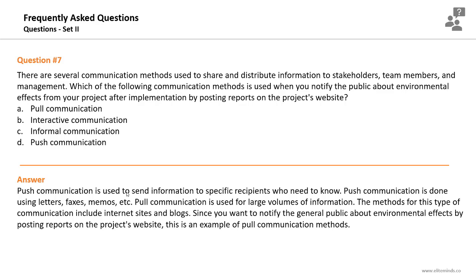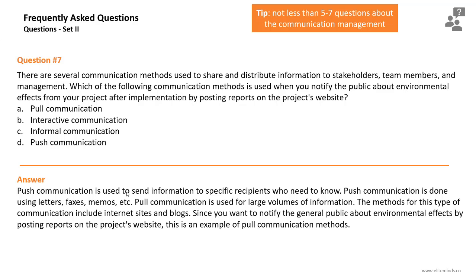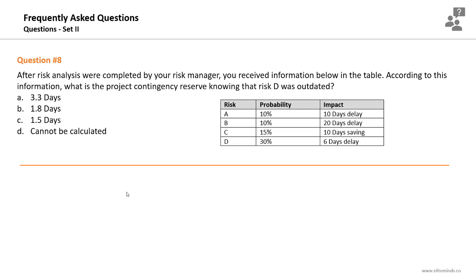Push communication is used to send information to specific recipients who need to know, using letters, faxes, and memos. Pull communication is used for large volumes of information and includes intranet sites and blogs. Since you want to notify the general public about environmental effects by posting reports on the project's website, this is an example of the pull communication method. Expect five to seven questions about communication management and not less than 10 questions about stakeholder engagement.